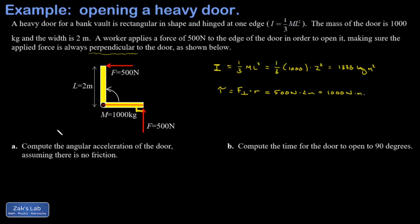Then I can get into my angular acceleration. There's a formula relating torque, moment of inertia, and angular acceleration: tau equals I alpha. I get that alpha equals tau over I.